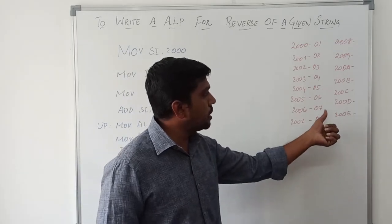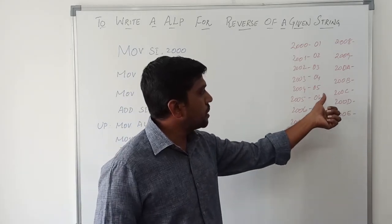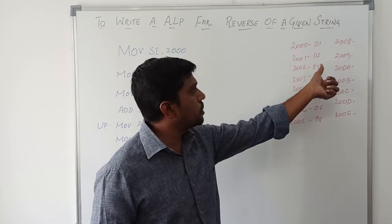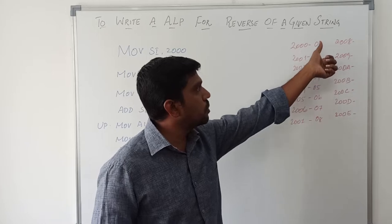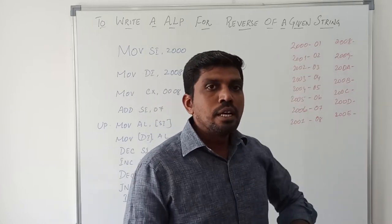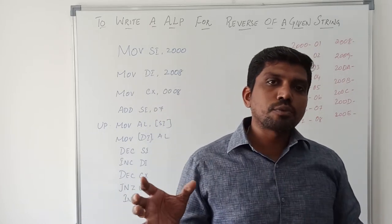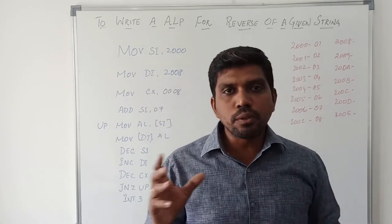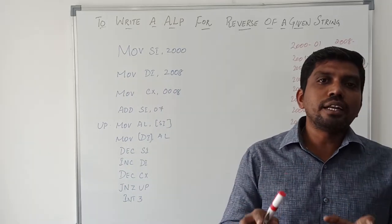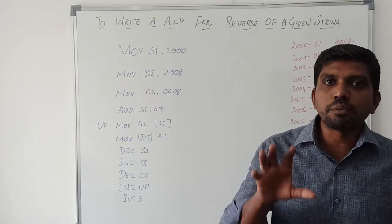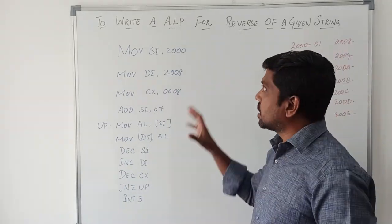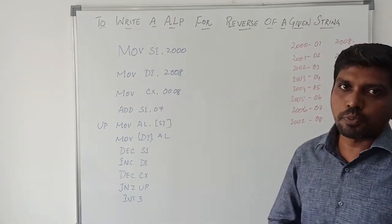The result starts from 08, 07, 06, 05, 04, 03, 02, 01. So in this order, the data is transferred from source point to destination point. How the data is transferred from source to destination, that we will discuss with the help of this program.